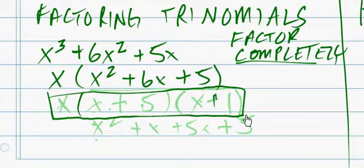Now, all we need to do is solve for x squared plus 6x plus 5. Since they're all positive, we know they're all going to be positive. So, x plus 5 times x plus 1.